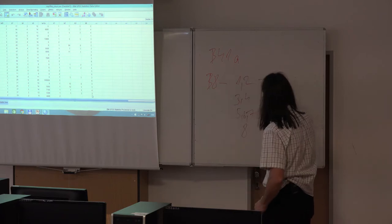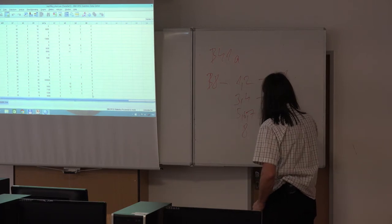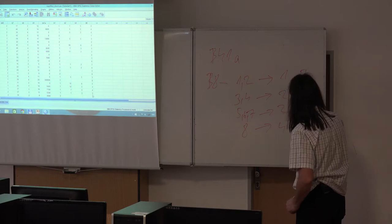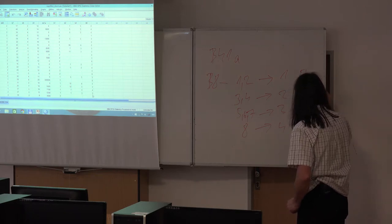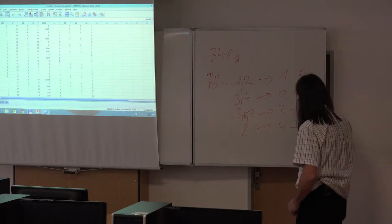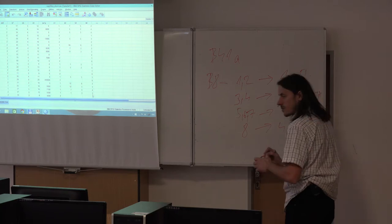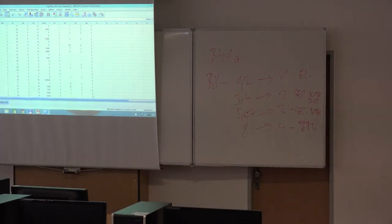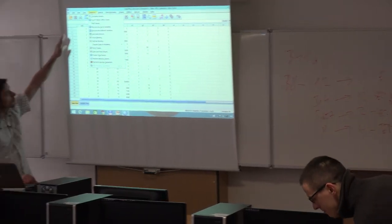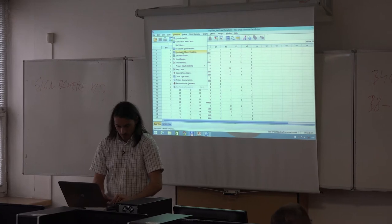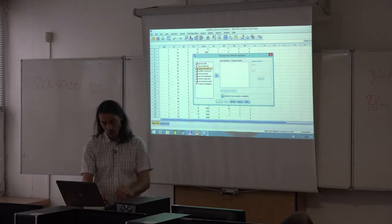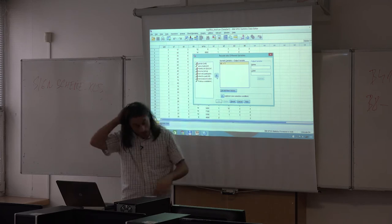The four new categories are: one — elementary or basic education, two — secondary without a diploma, three — secondary with a diploma, and four — tertiary education. Let's go to Transform, Recode Into Different Variable. The third variable in our dataset is highest education, B8. Move it to the right window and name the new variable EDU, then click Change.